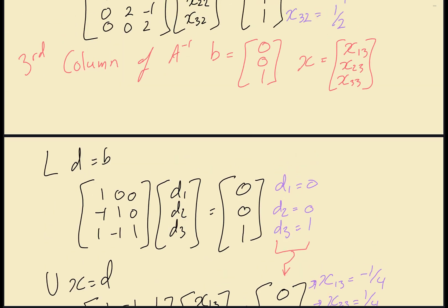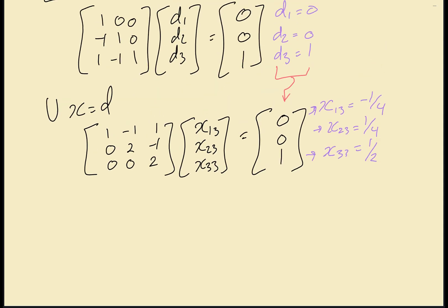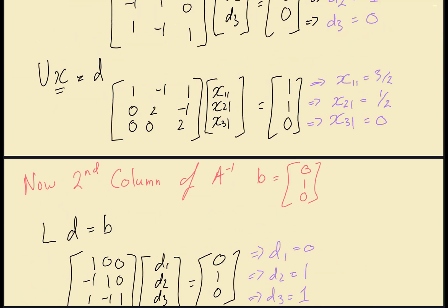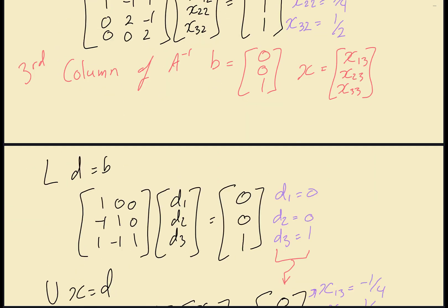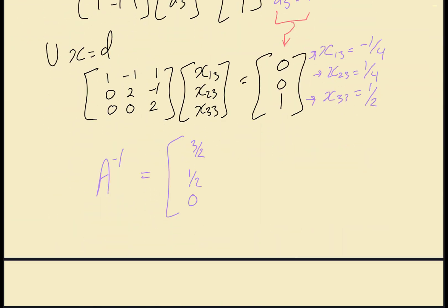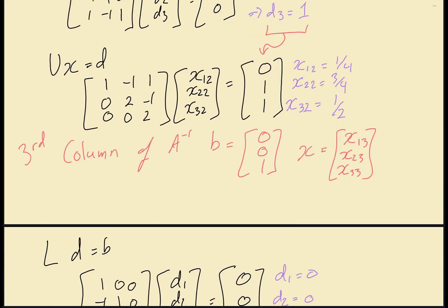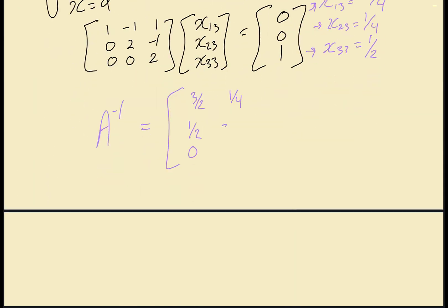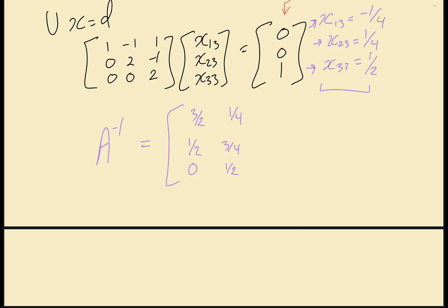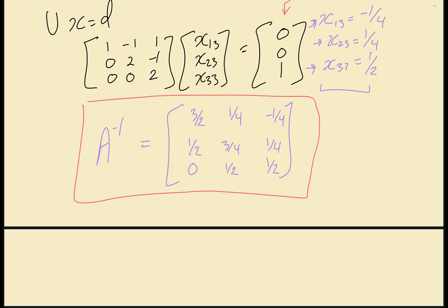Now we combine all the x vectors to form our inverse matrix A⁻¹. Putting in the values: the first column gives [3/2, 1/2, 0]; the second step gave [1/4, 3/4, 1/2]; and the third step gave [-1/4, 1/4, 1/2]. So the inverse matrix A⁻¹ = [3/2, 1/4, -1/4; 1/2, 3/4, 1/4; 0, 1/2, 1/2]. This is the inverse solved using LU decomposition.